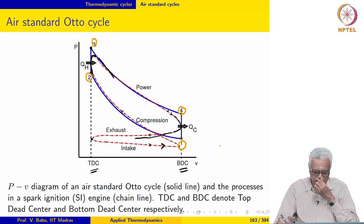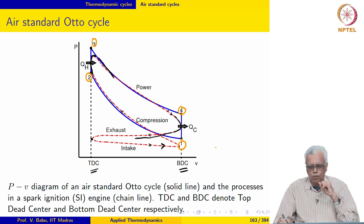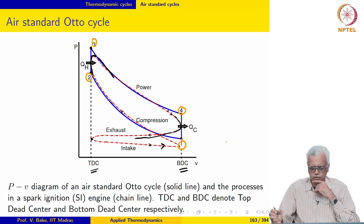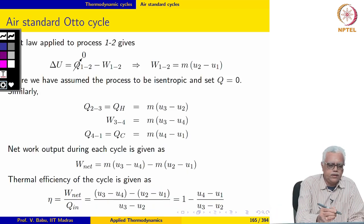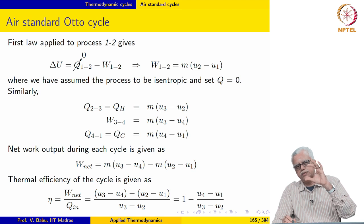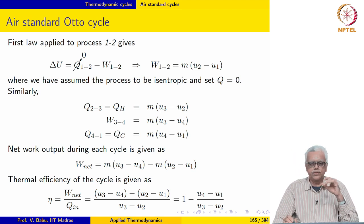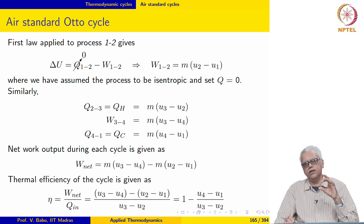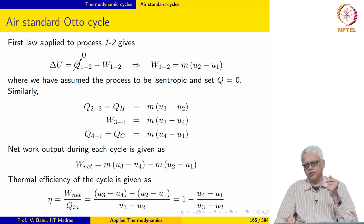In the Otto cycle analysis we focus on one cylinder only; extending this to multiple cylinders is trivial. Since a fixed quantity of air executes a cyclic process in each cylinder, unlike the air standard Brayton cycle, the processes here are not steady flow processes — they are non-flow processes.